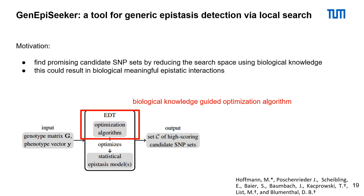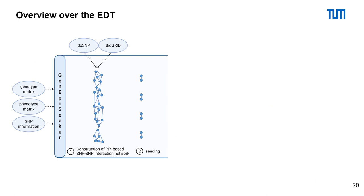Next, we developed GnEBseeker, a yet unpublished tool for epistasis detection via local search. Our motivation was to find promising SNP sets by reducing the search space using biological knowledge. GnEBseeker uses a genotype and a phenotype matrix as an input. It also uses biogrid as a PPI. We ship the required dbSNP and biogrid information upon download.